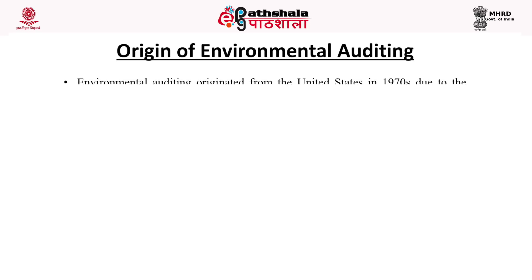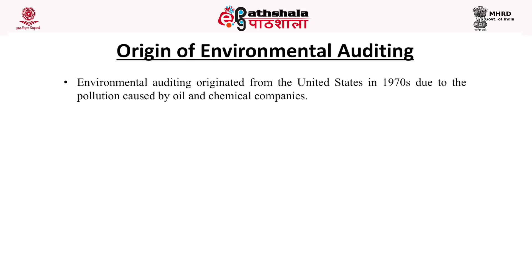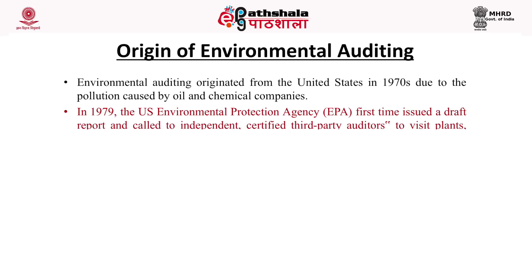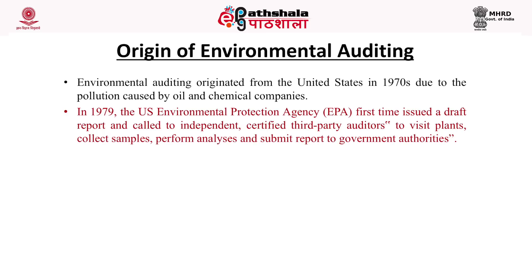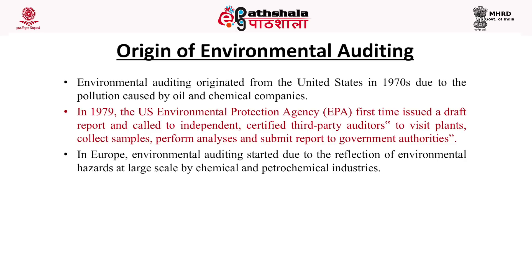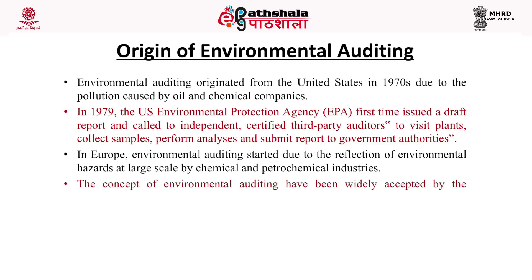Now we come to the origin of environmental auditing. Environmental auditing originated in the United States in the 1970s, basically due to pollution caused by the oil and chemical industries. In 1979, the United States Environmental Protection Agency (US EPA) first issued a draft report and called on independent, certified third-party auditors to visit plants, collect samples, perform analysis, and submit reports to governmental authorities.